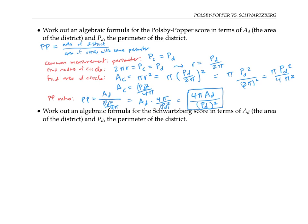This expression has some nice features. In particular, the units of the numerator and denominator cancel out. For example, if we're measuring in kilometers, the area of the district has units of kilometers squared, and since the perimeter is squared in the denominator, we also get kilometers squared there. So if we convert from kilometers to meters by multiplying each unit of kilometers by 1000, we'd multiply the numerator by 1000² and the denominator by 1000² as well, and those factors cancel out — leaving the same final value whether we use meters, kilometers, or any other unit of distance.